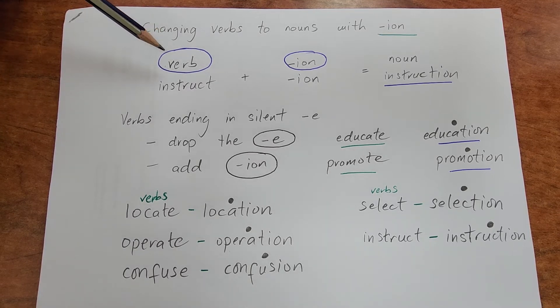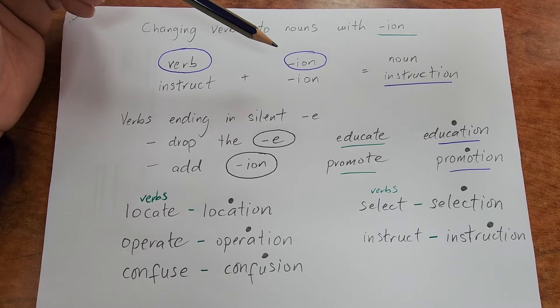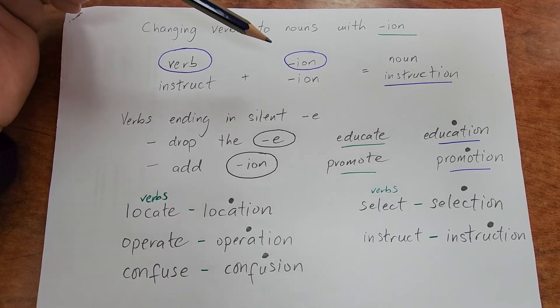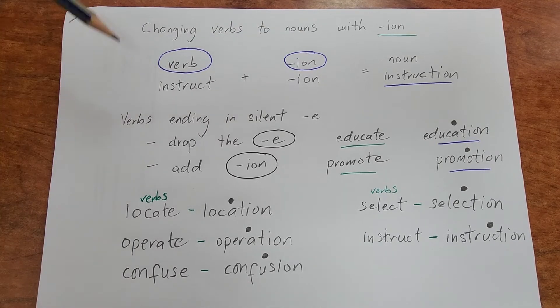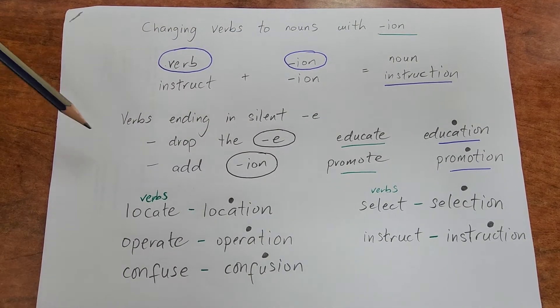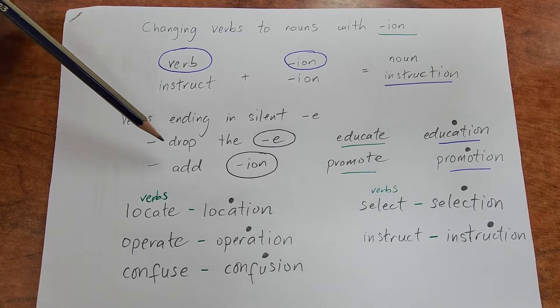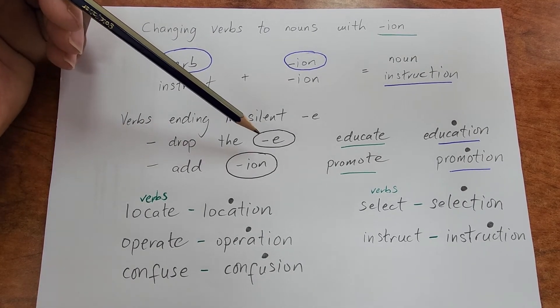We have verbs here, which is the base. Then in order to make a noun, we're going to add -ion, so instruct becomes instruction. Now when you have a verb ending with a silent e, you have to drop the e and add -ion.